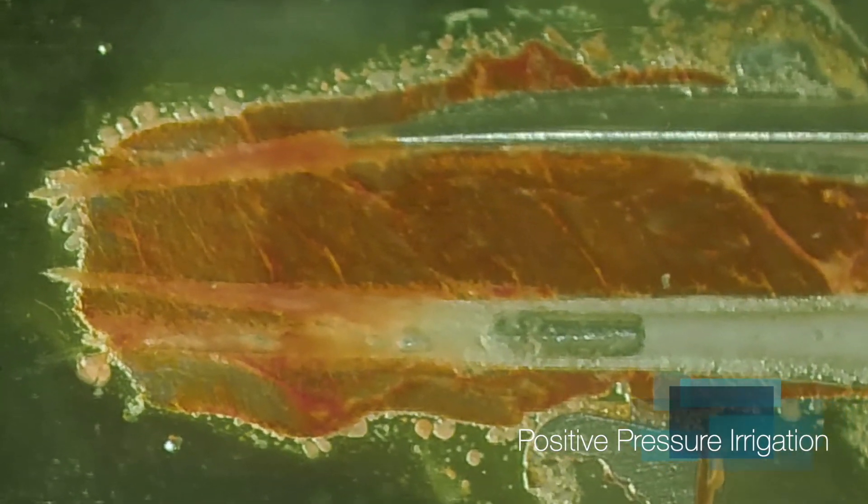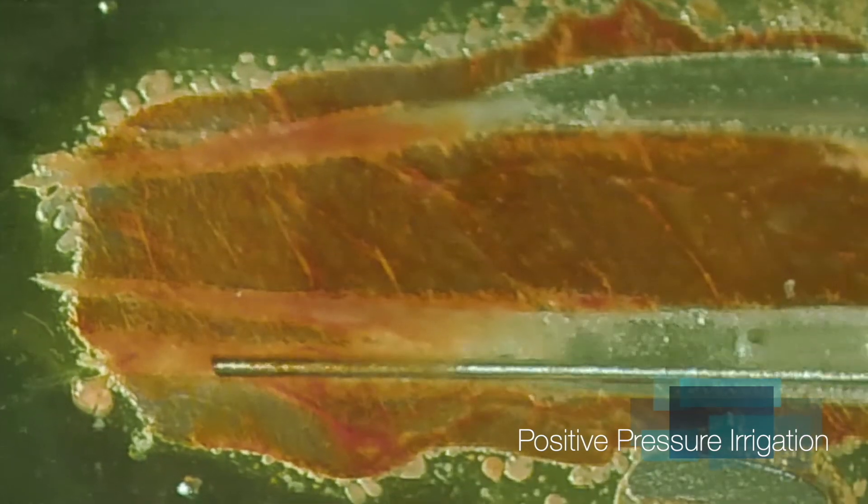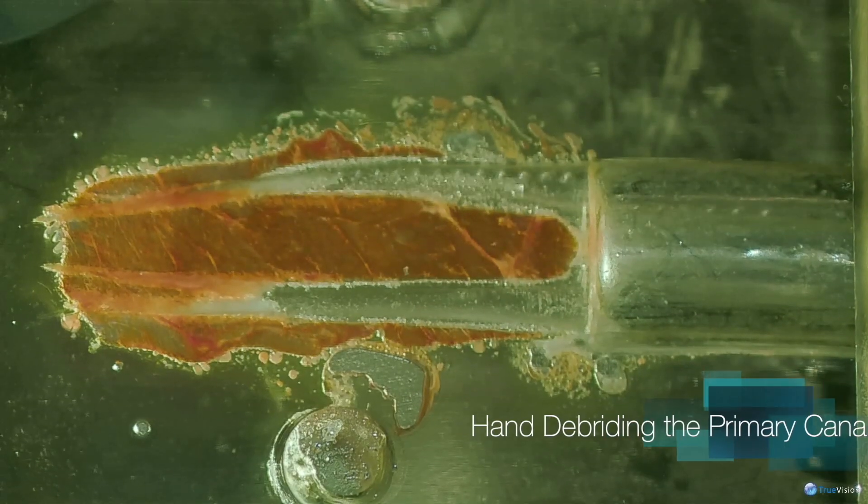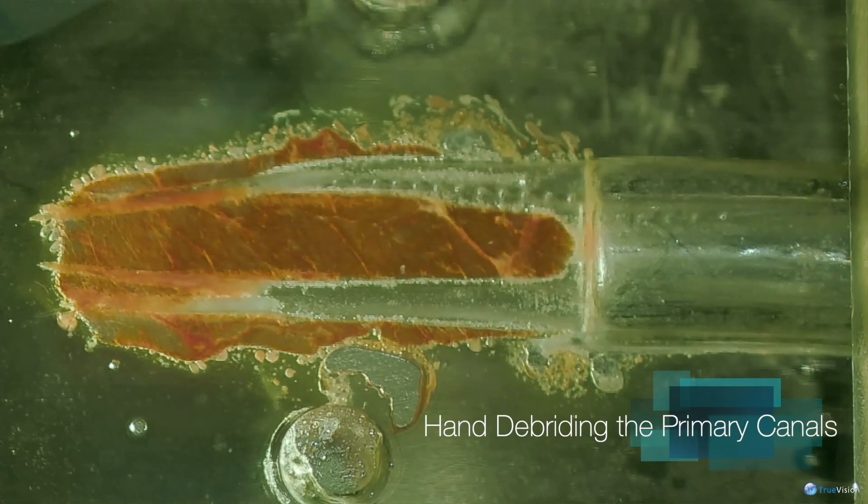Look at what's left after hand instrumentation. Here's positive pressure irrigation that won't be able to affect the apical zone until more preparation is accomplished.